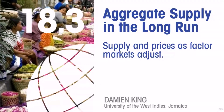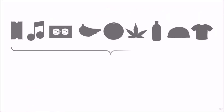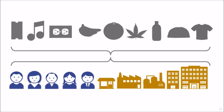Aggregate supply in the long run. How does the supply of goods and services, and prices, change as factor markets — the markets for factors of production — adjust in the long run? GDP is produced by factors of production: by labor and capital. Let us take a look at what happens in the markets for those factors as the economy tries to produce more or less GDP, more or less output.